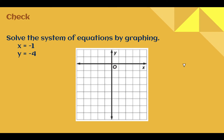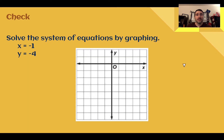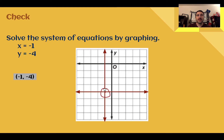Check your understanding: solve this system by graphing. The answer is (−1, −4). The line x equals negative 1 is a vertical line, and y equals negative 4 is a horizontal line. They intersect at the coordinate (−1, −4). Plugging them back in, negative 1 and negative 4 are the only values that work for x and y.